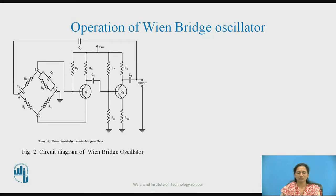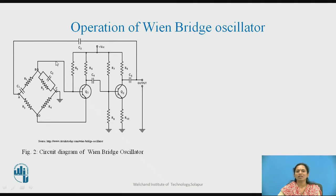In this bridge circuit, you can observe R1C1 in series combination and R2C2 in parallel combination, which gives positive feedback — that is, a regenerative effect. The R4 resistor provides a degenerative effect, that is, negative feedback, which gives amplitude stability to the output. The bridge gets balanced at a particular condition, and the signal is provided through this circuit to the base of transistor Q1.